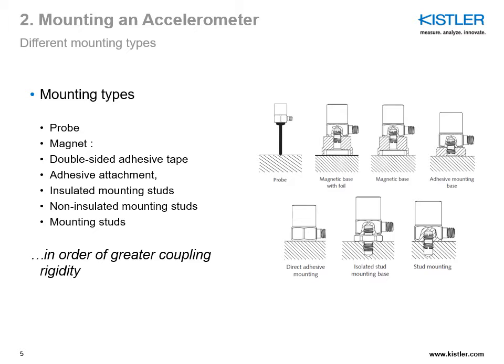Here are the most common mounting types: starting from the probe, then magnetic mounting using a magnet (only for ferromagnetic surfaces), then adhesive mounting — either direct adhesive sensor on the surface or using an adhesive mounting base — and stud mounting. These are represented in order of greater coupling rigidity, meaning stud mounting provides the stiffest coupling and a probe provides the softest.